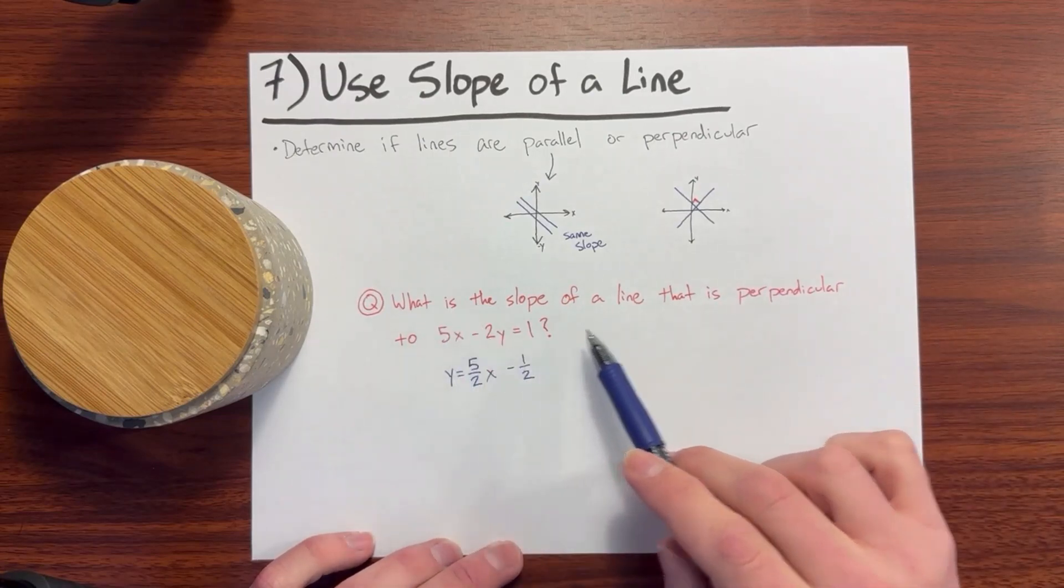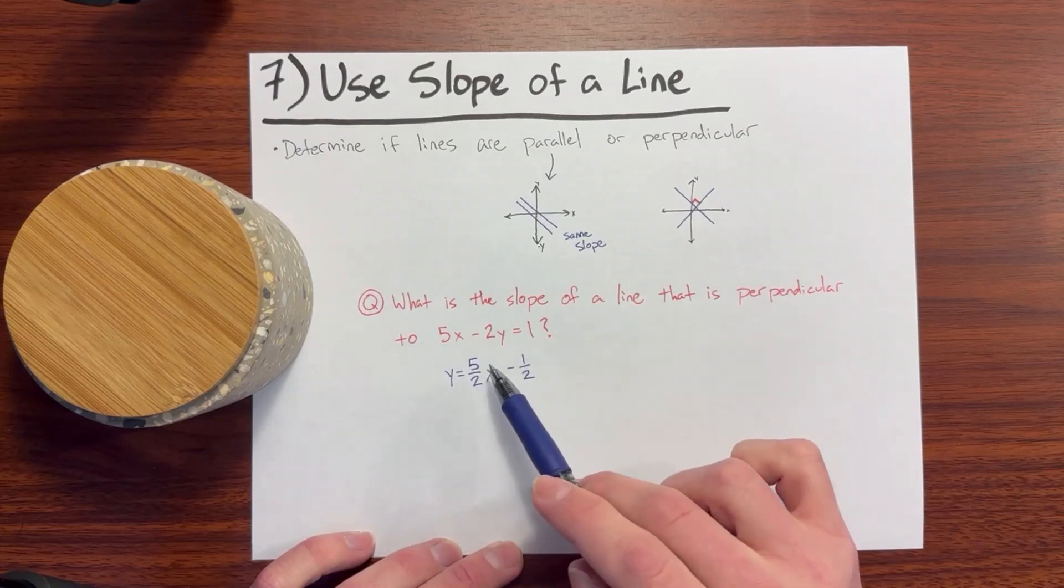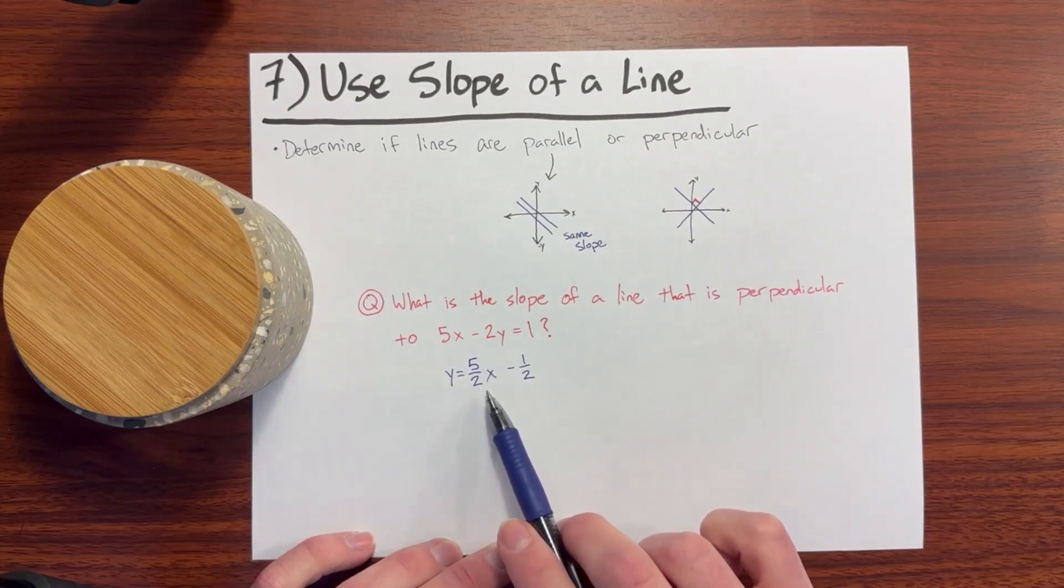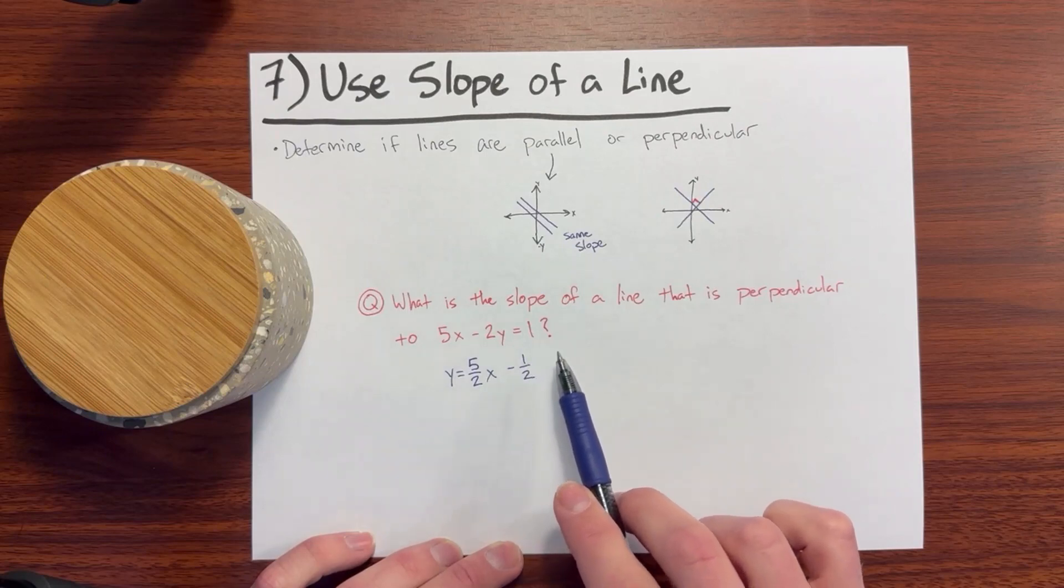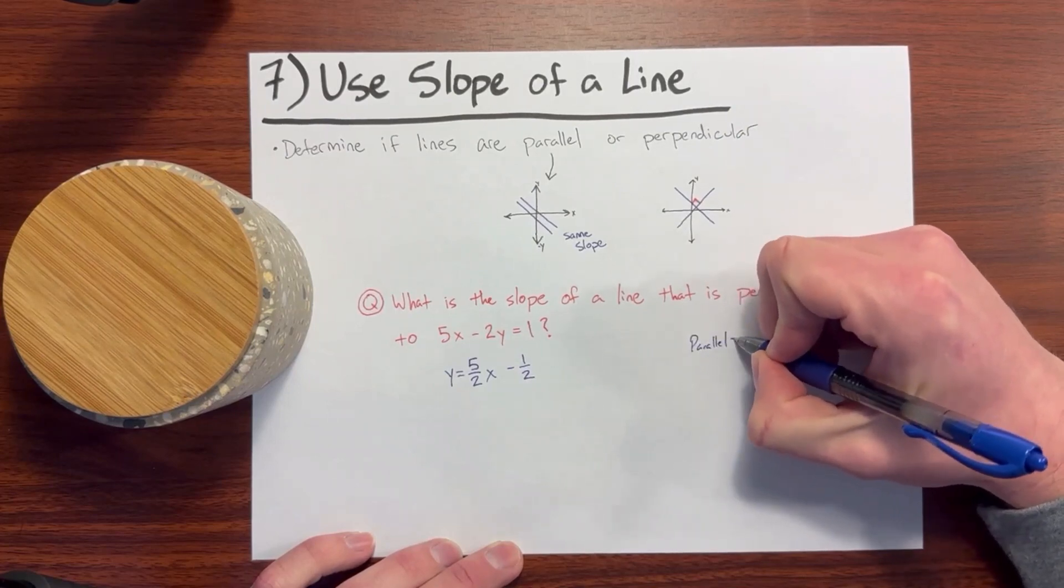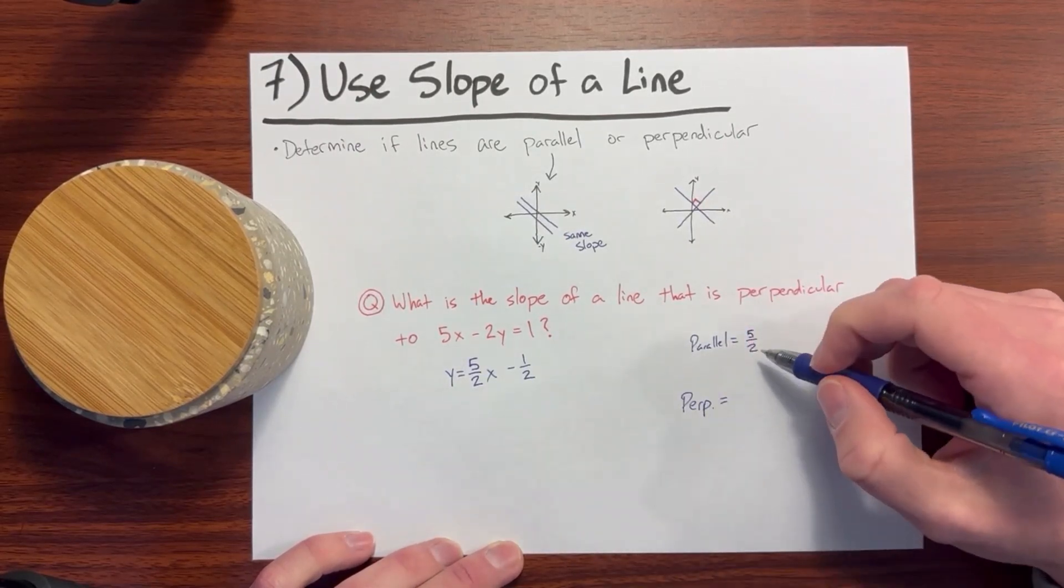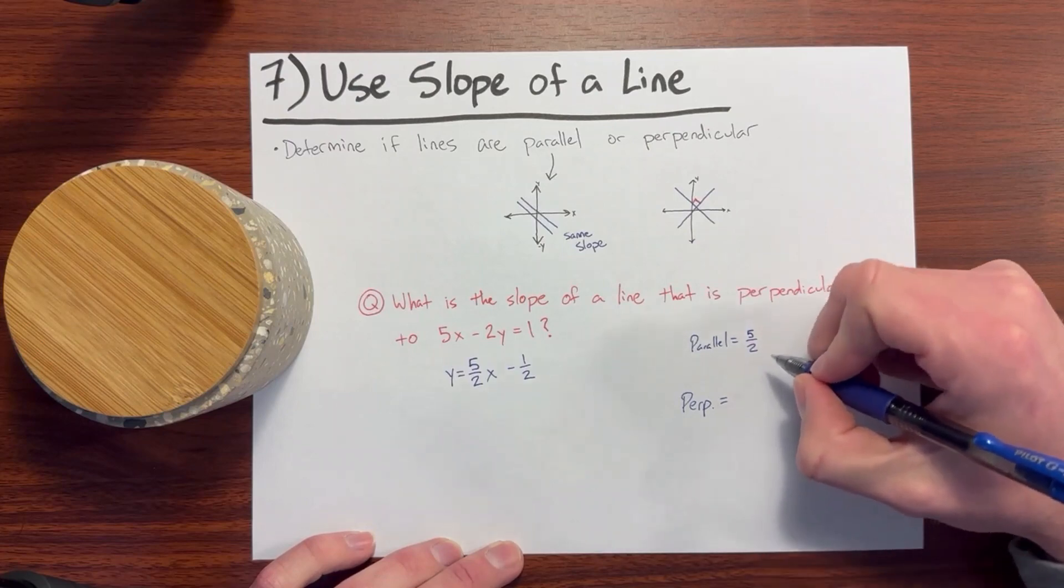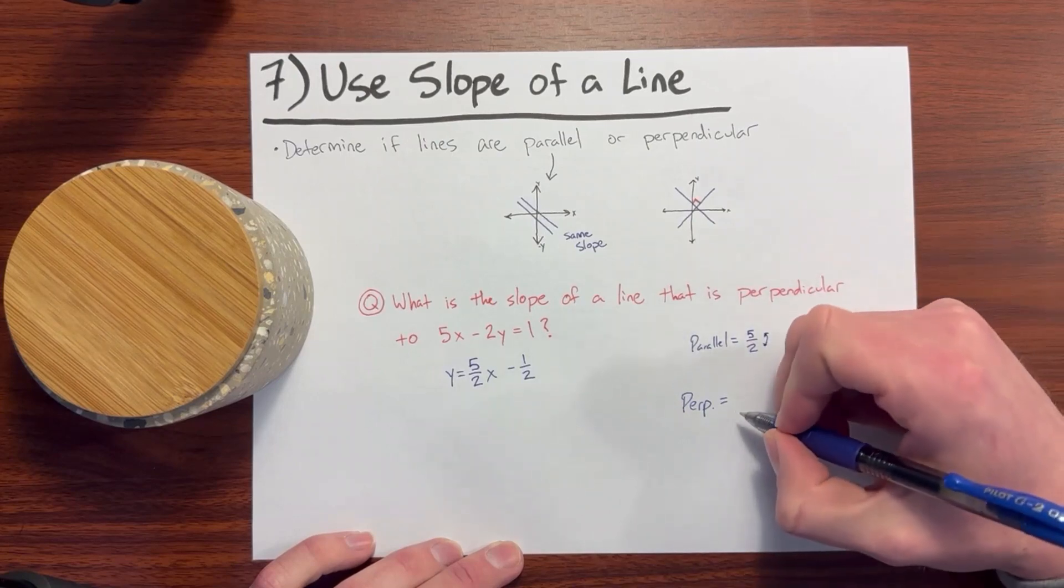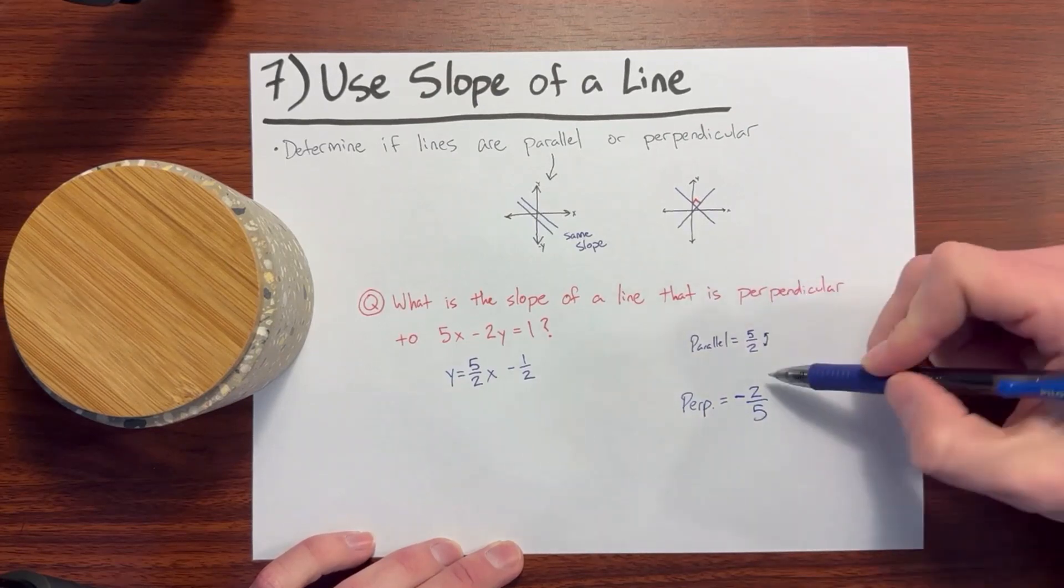So a question could ask, what is the slope of a line that is perpendicular to 5x minus 2y equals 1? First we will get into the standard slope form. And it works out to be y equals 5 halves x minus 1 half. If the question were to ask, what is the slope of a line that is parallel? Well then it would be the same. Parallel would be 5 halves. Perpendicular on the other hand, it will be the opposite slope. So what you're going to do is you're going to flip the 5 and 2 and then reverse the sign out front. So that would end up being negative 2 fifths is the answer to this problem.